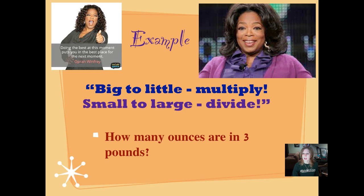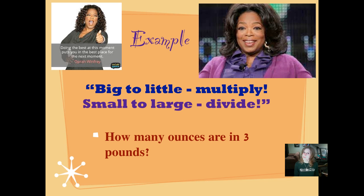So our example is: how many ounces are in 3 pounds? And we are, once again, with customary measurement, we always use this: big to little multiply, small to large divide. Big to little multiply, small to large divide. Big to little multiply, small to large divide.